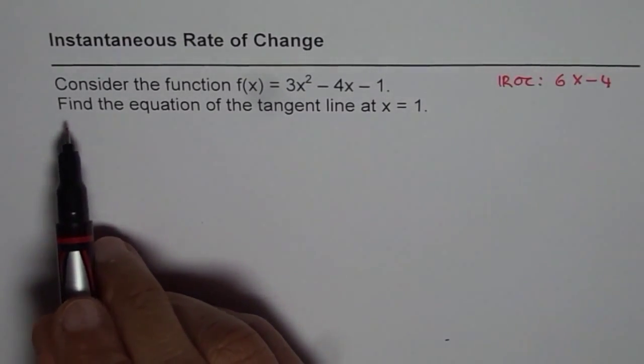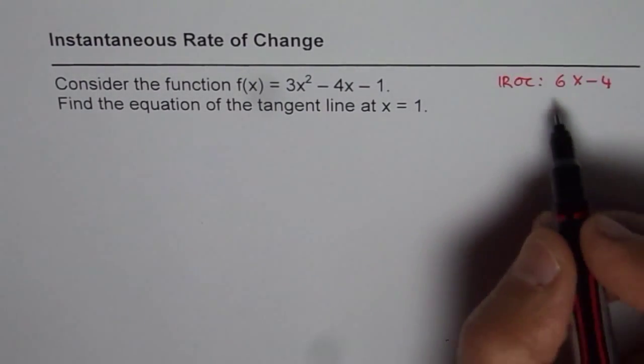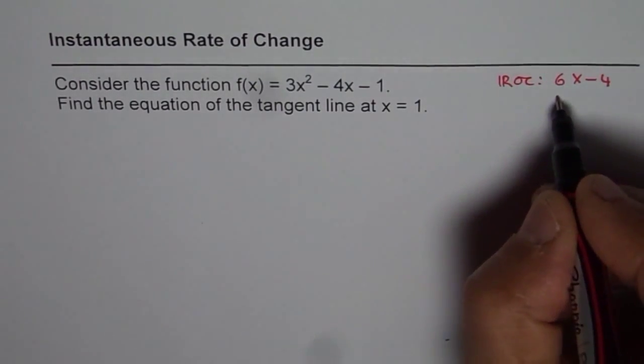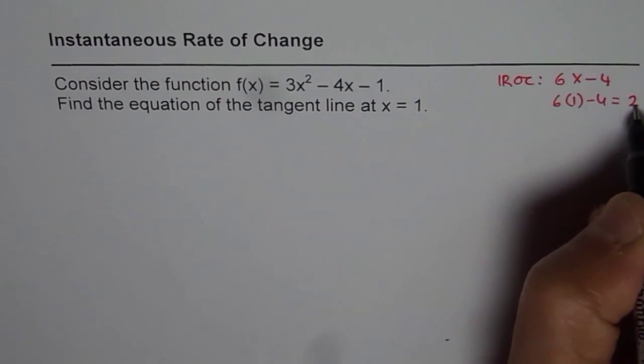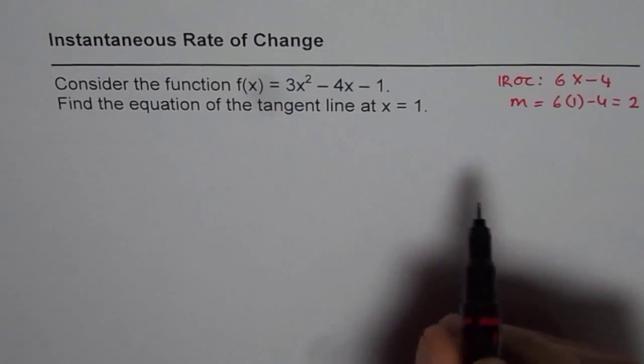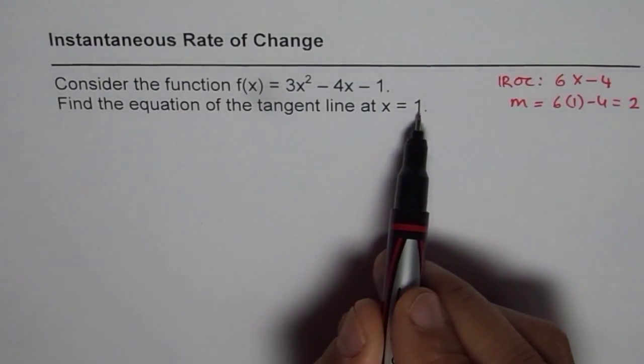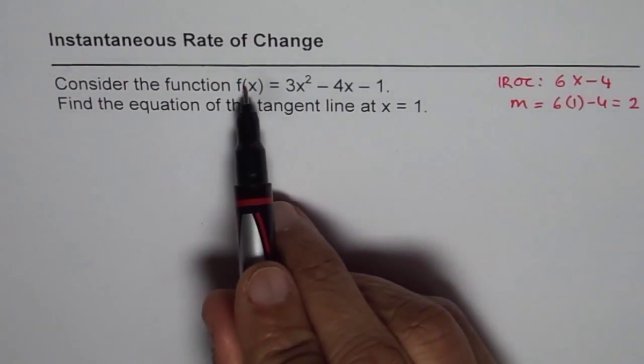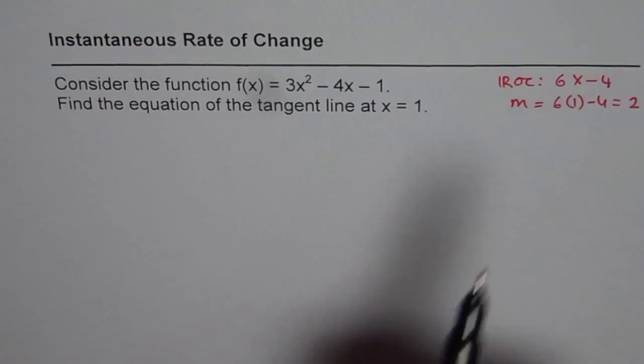Since we want to find equation of a tangent line at x = 1, we will plug in 1 here. So it will be 6 times 1 minus 4 and we are expecting answer of 2 as far as slope is concerned. Now we know the slope, we know point x value is 1. We should also find the value of the function at 1. I think that helps you to check your answer.